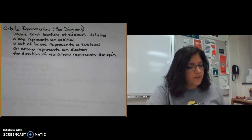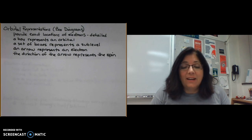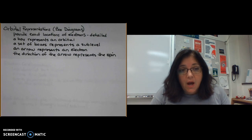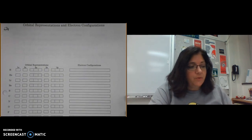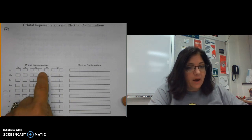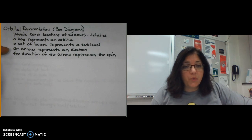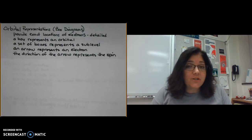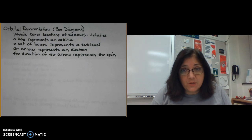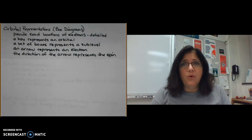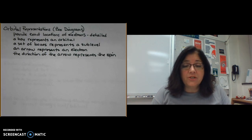Orbital representations are the most detailed, providing exact locations about where electrons are. Boxes represent orbitals, and a set of boxes represents a sublevel. Arrows placed into boxes represent electrons, and the direction of the arrow — up or down — represents the spin. Orbital representations are the most detailed, so if you have a question about why something is happening based on the electron cloud, always write the orbital representation.